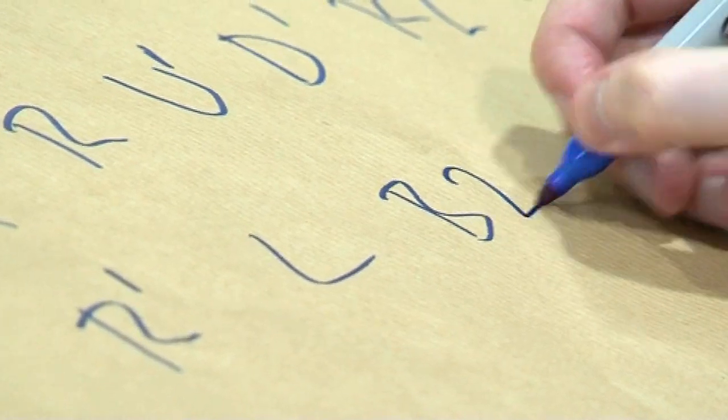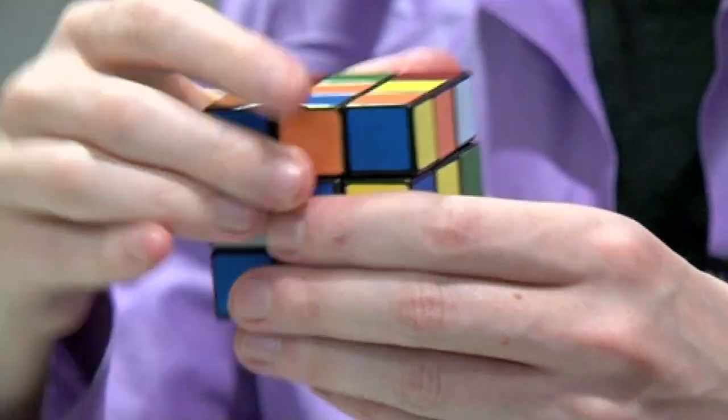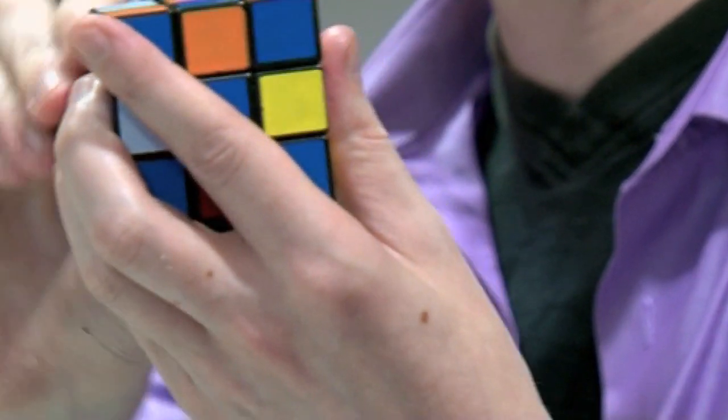Bottom twice - once, twice. Up twice - once, twice. And then do the front twice, so once, twice. Look at that.